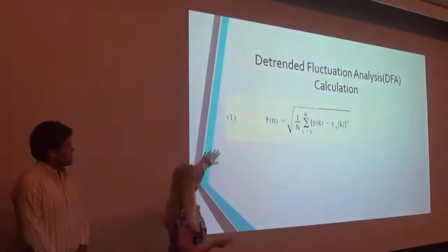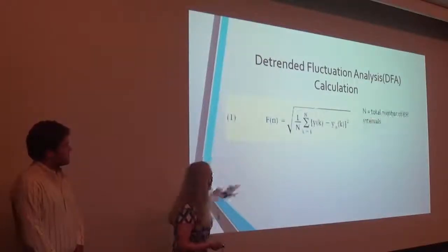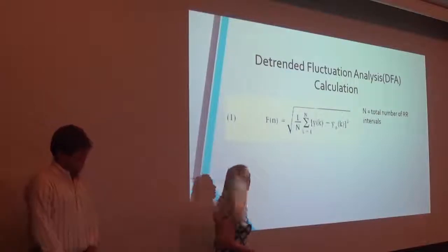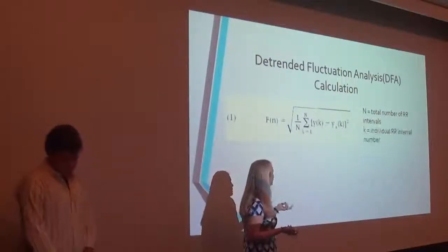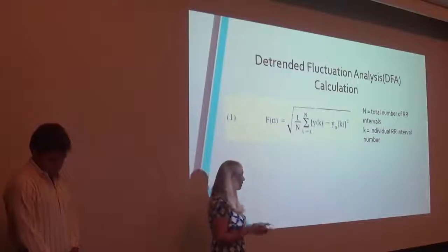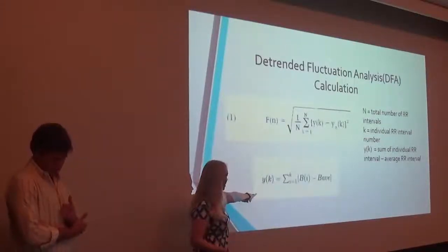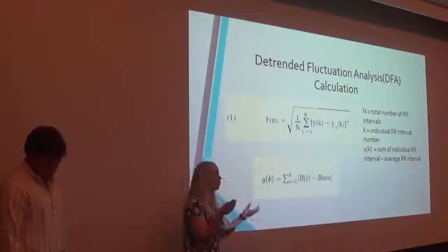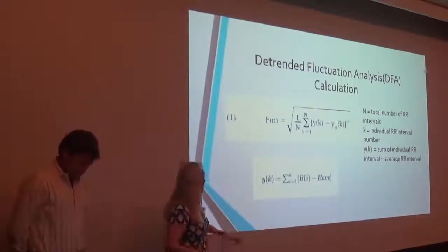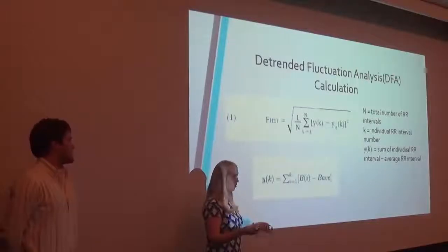So this is the actual calculation here in equation one, where n is the total number of R intervals, so that's the total heartbeats, k is the individual heartbeat that you're looking at. Y of k is this equation right here. So it's taking one heartbeat length and subtracting the average heartbeat length. And then you're taking the sum of those over k heartbeats.